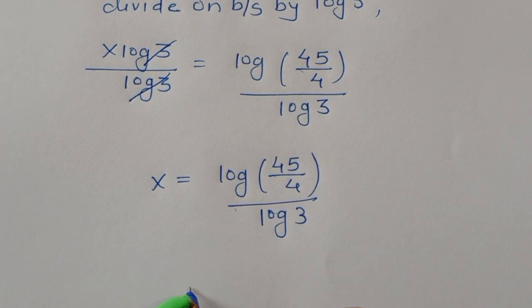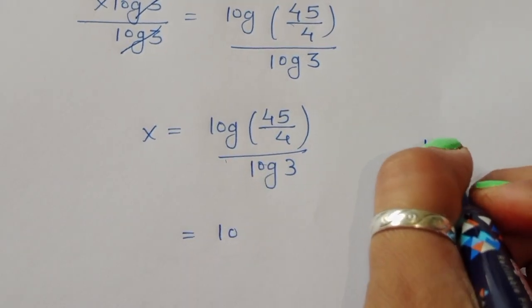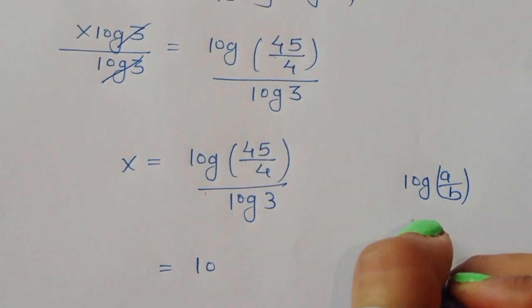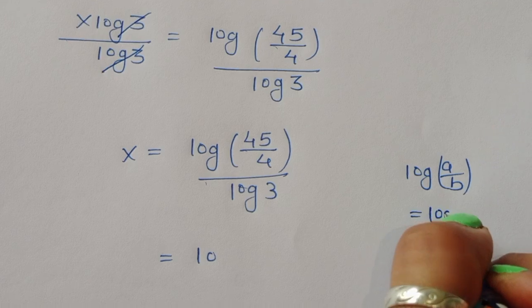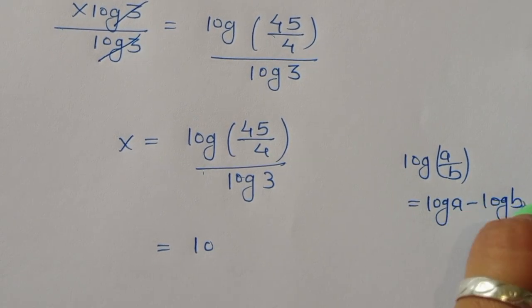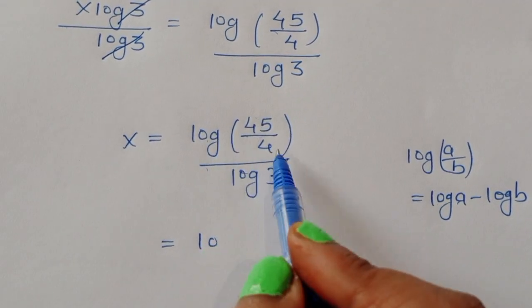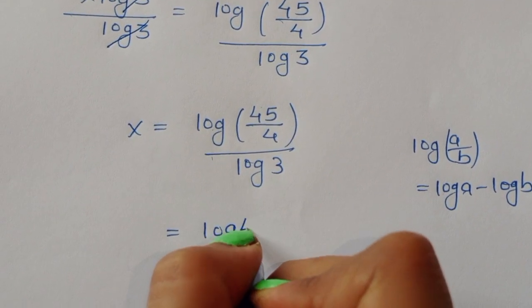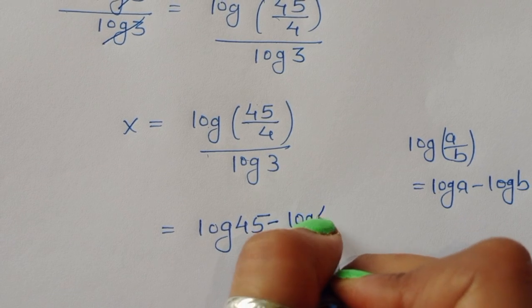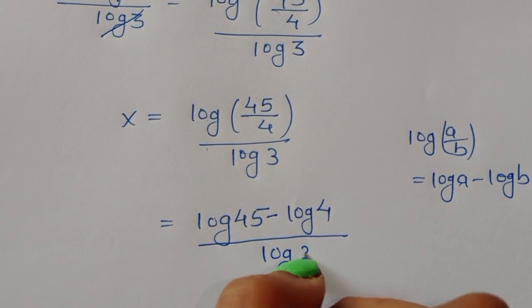Now x equals log(45/4) divided by log(3). We use the formula log(a/b) equals log(a) minus log(b), so log(45/4) becomes log(45) minus log(4), all divided by log(3).